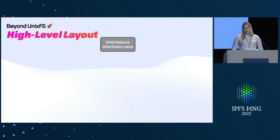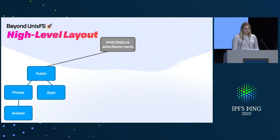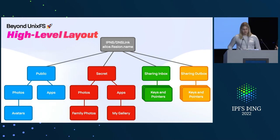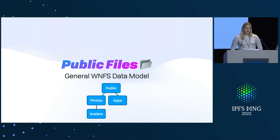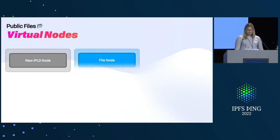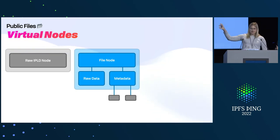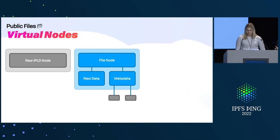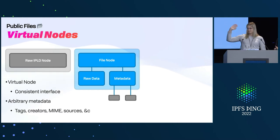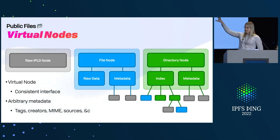At a very high level, at the top you have some sort of mutable pointer — IPNS or DNS link — and nested under that, public files, secret files, and a sharing inbox and outbox. The public file system encapsulates the basic data model. We have regular IPLD nodes, but also extended file nodes that have raw data and fully extensible metadata — you can write arbitrary data into that, just like on any modern file system. This is broken into two components: user space and kernel — what the system manages versus what users can write into, which includes arbitrary tags, MIME types, sources, commit messages. And then directories, which can nest more data on top of that.